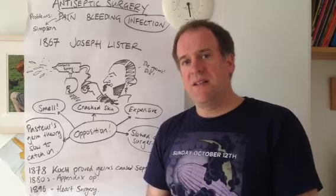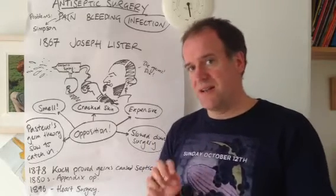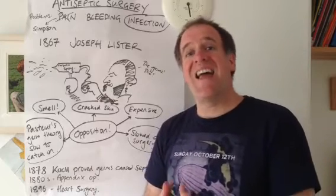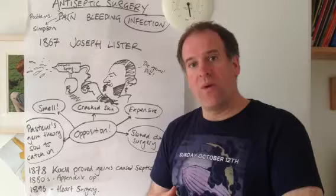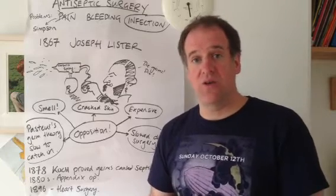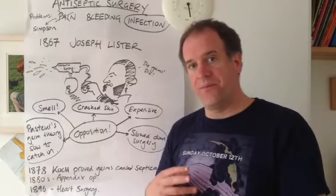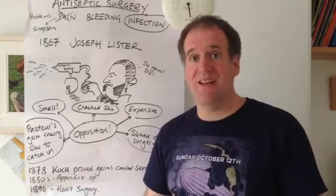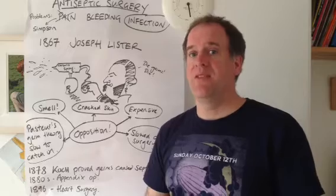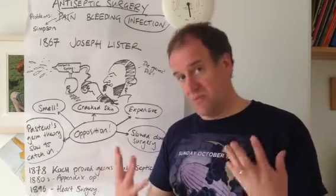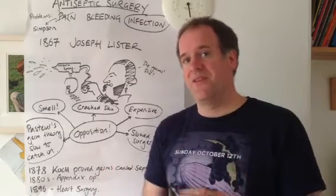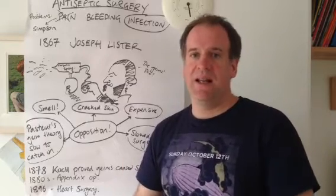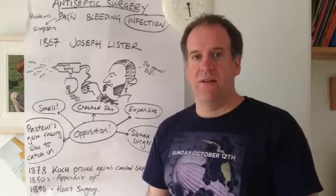By the 1890s, this antiseptic surgery — spraying carbolic spray in the operating theatre to kill the germs — was turned into aseptic surgery, creating an environment where germs didn't exist. Making sure that all tools that were used, all work benches, were sprayed with carbolic spray to kill germs in the first place. Everything was washed thoroughly, and doctors began to wear gloves, because even though they washed their hands, they couldn't get the dirt under their nails — creating a completely germ-free environment.